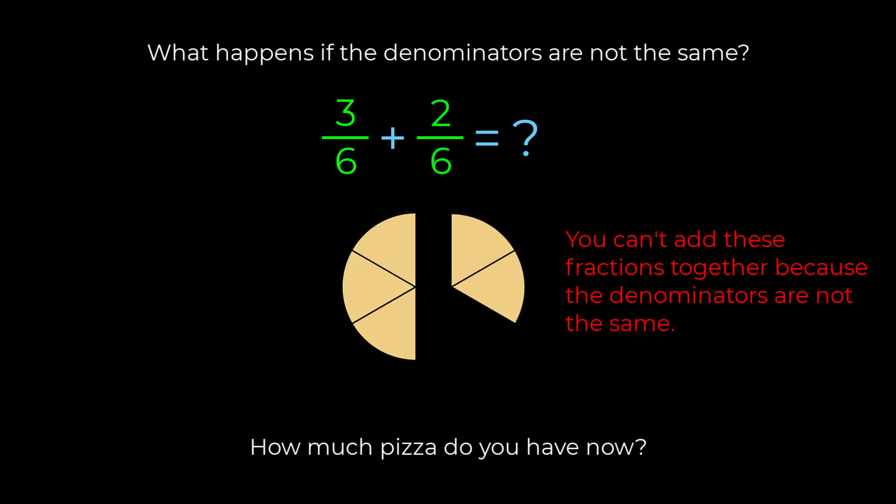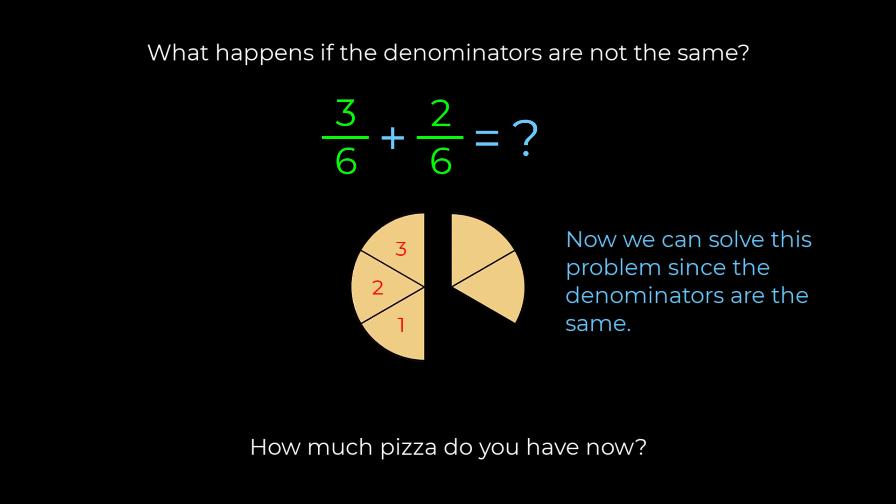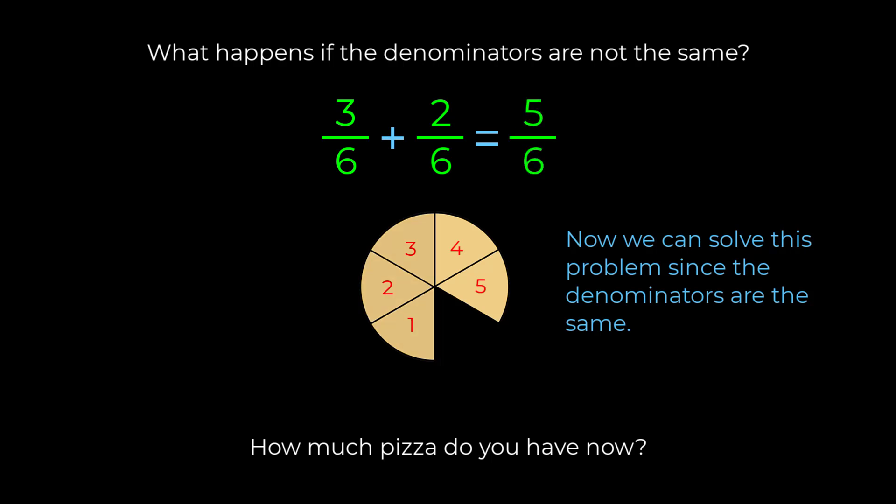Again, the same amount of pizza. Now the problem of how much pizza you have is much easier to solve. You start with three sixths of a pizza, and I give you an additional two sixths of a pizza. So now you have five sixths of a pizza.